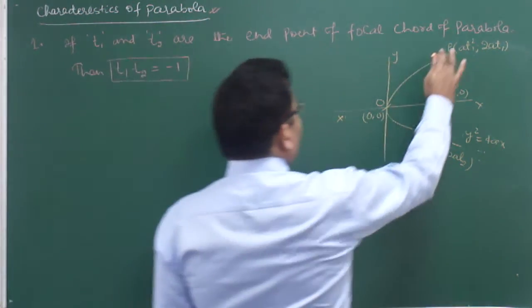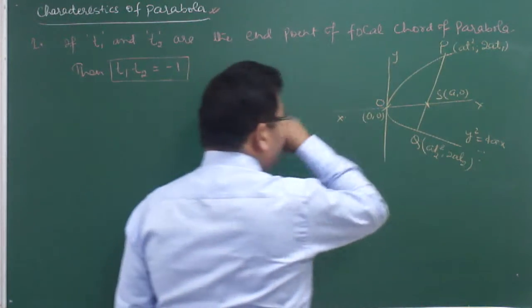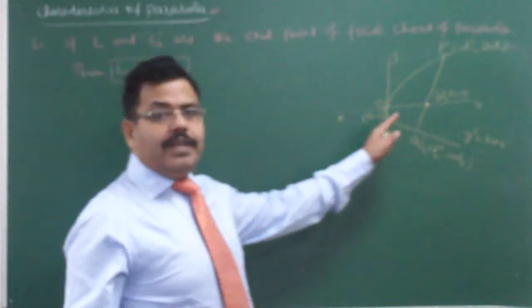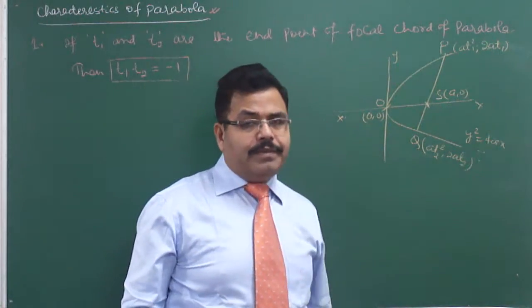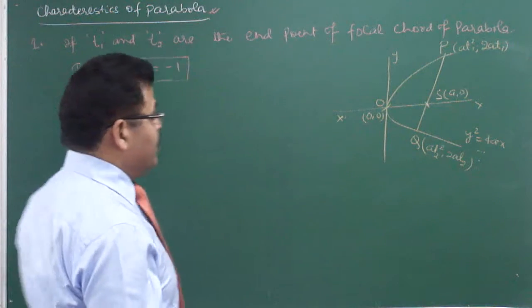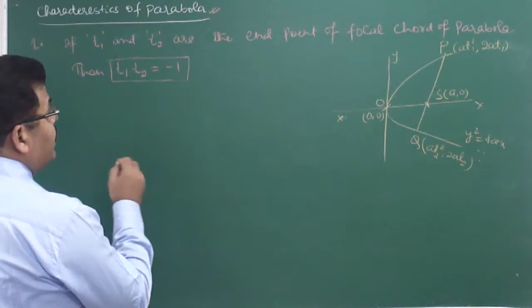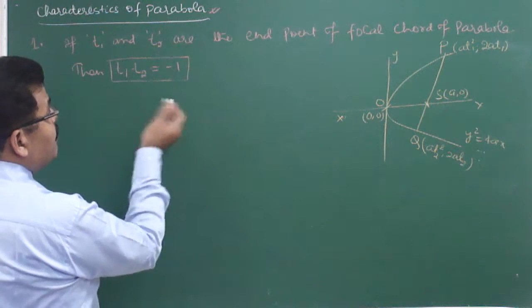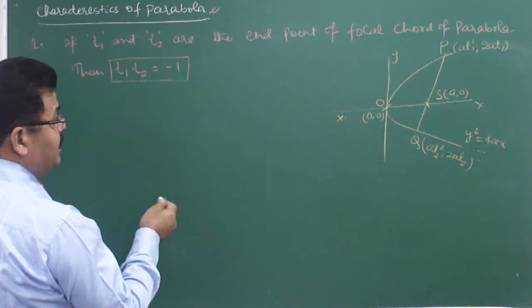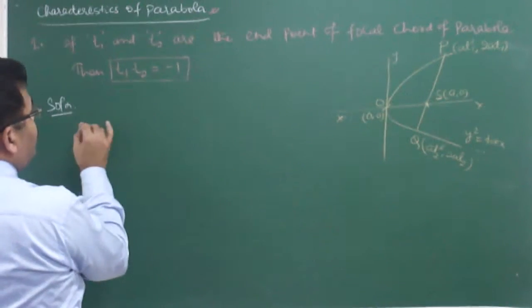P and Q are endpoints of the focal chord of the parabola, so there is a relation: T1·T2 = -1. Let me prove this. I would like to prove that the equation of the line joining P and S, using two-point form, gives us this proof.